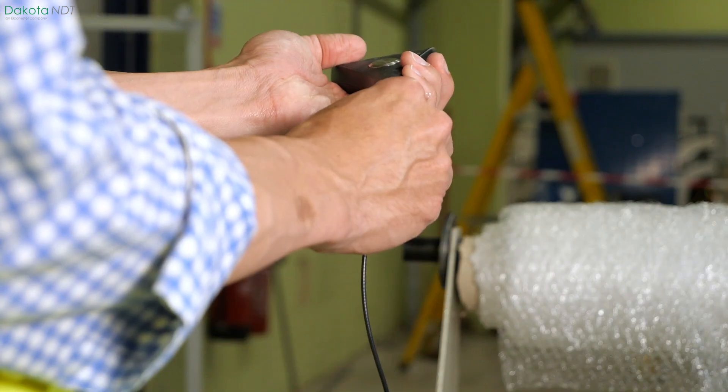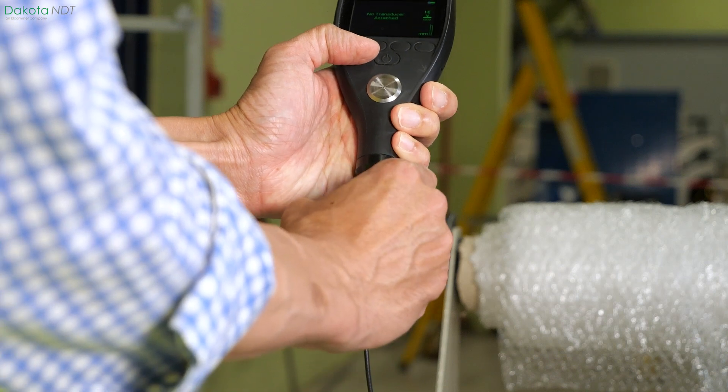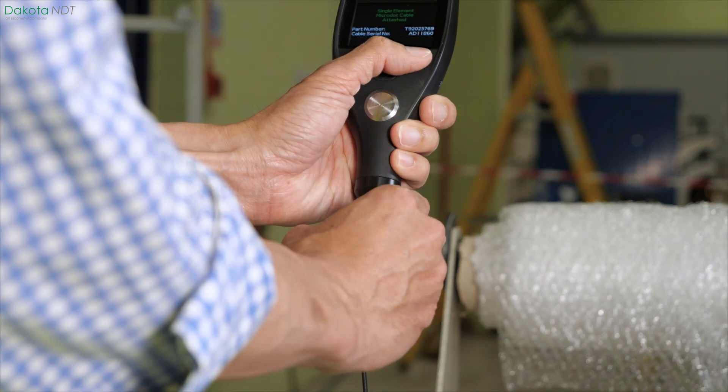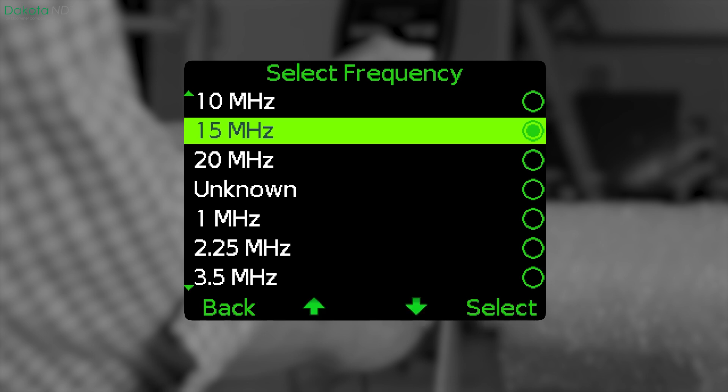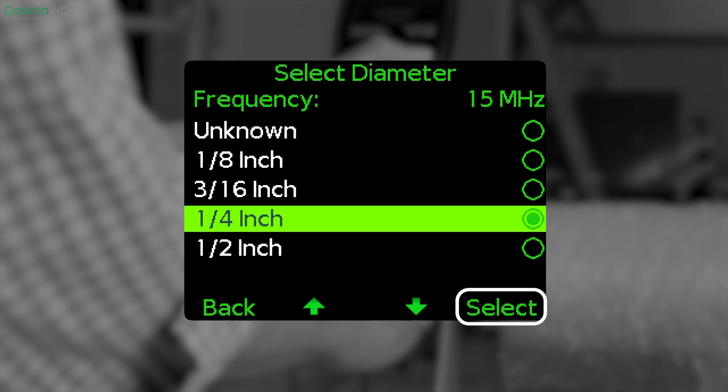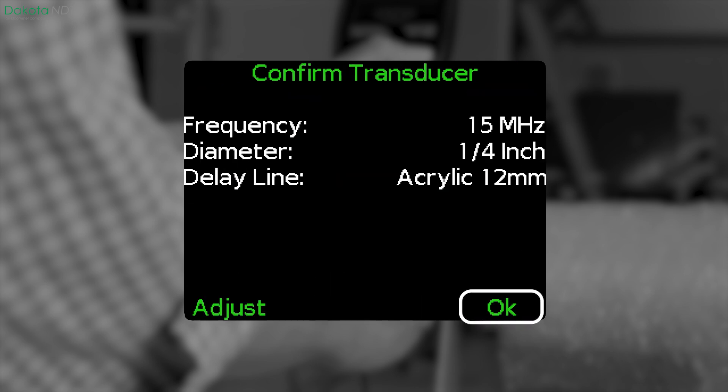Next, connect your transducer to your Dakota NDT PCX. Typically, you will be automatically asked to confirm the frequency and diameter of your transducer, along with the delay line you are using. Simply select the delay line from the list in the gauge and press OK.